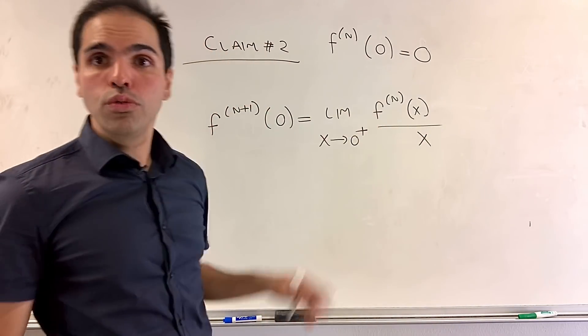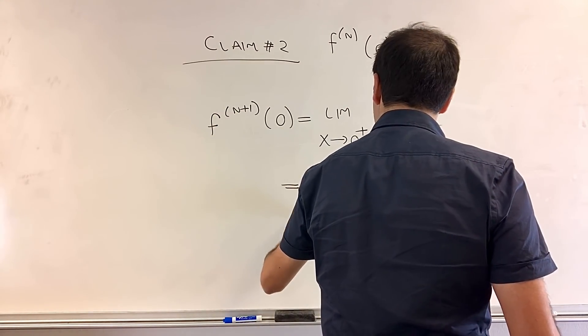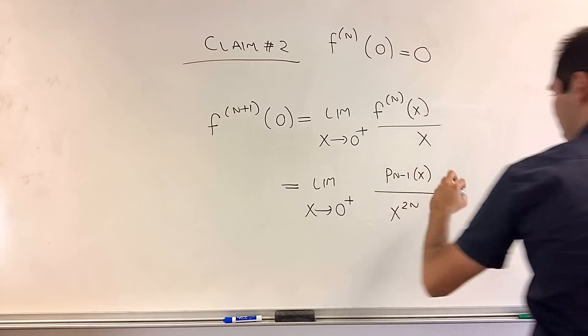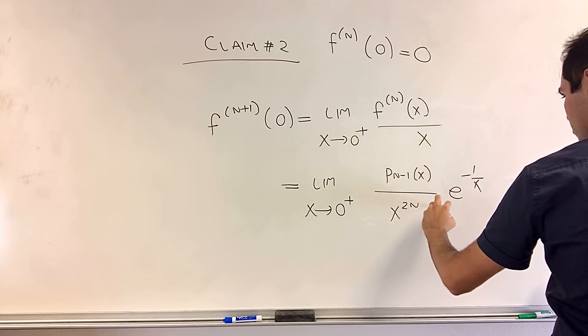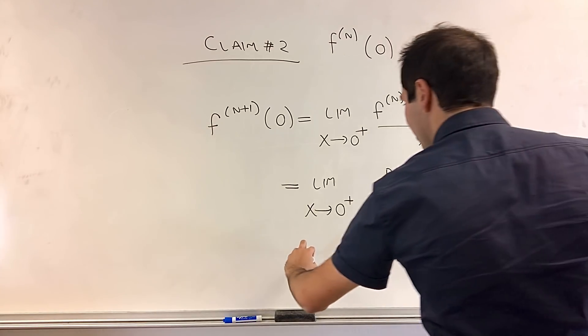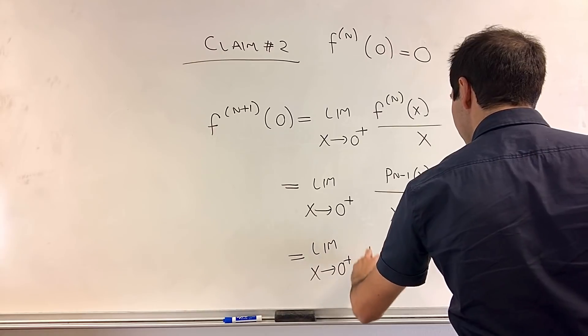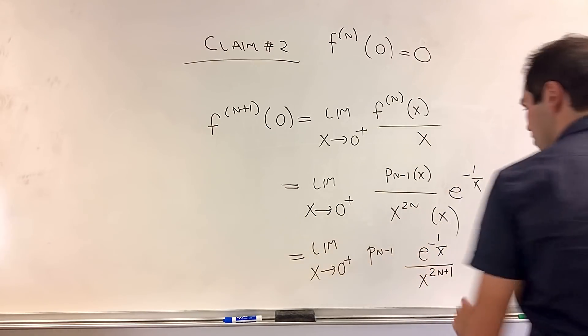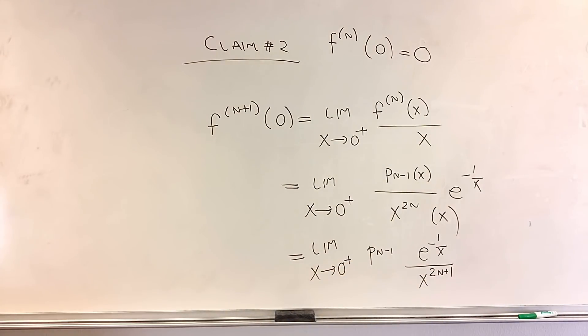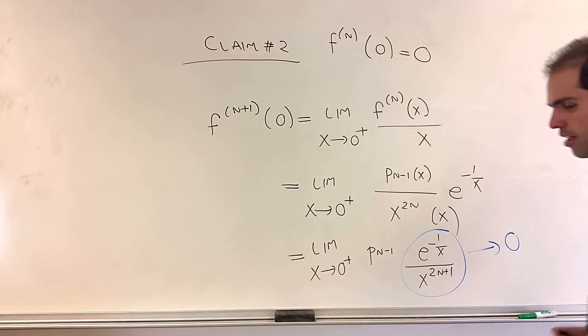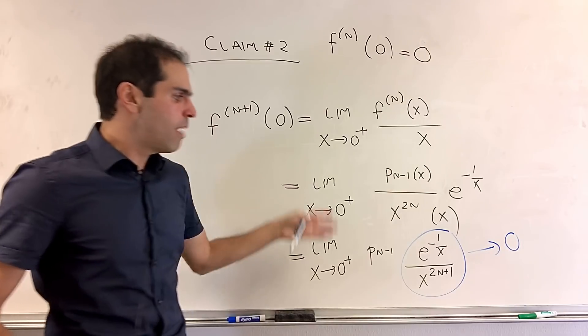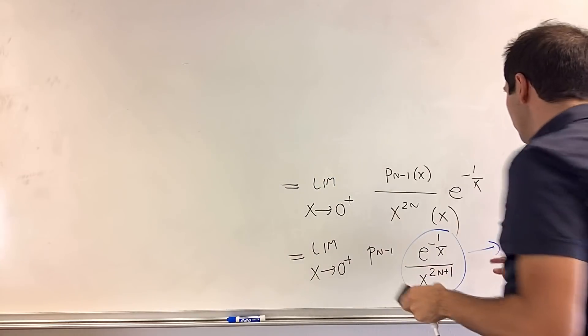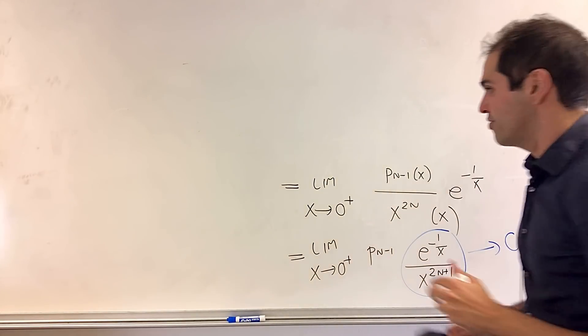And as before, we just care about the positive side. So x goes to 0 plus, and then, well, now we just need to use what we've shown before. This is limit x goes to 0 plus of p n minus 1 of x over x to the 2n times f, so times e to the minus 1 over x, times x if you wish, and which now becomes limit x goes to 0 plus of p n minus 1 of x times e to the minus 1 over x over x to the 2n plus 1. And essentially, it's enough to show that this goes to 0, but in fact, let me show something stronger. Let me show that e of minus 1 over x over any power of x goes to 0.